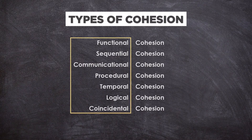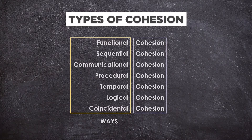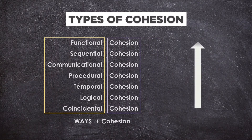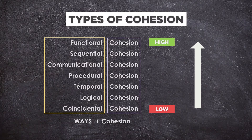These are the ways where one module can use the functions of others — they will be named accordingly with 'cohesion' included at last. The arrangement goes from low cohesion to high cohesion, where low cohesion is coincidental cohesion and high cohesion is functional cohesion.